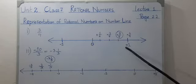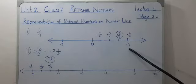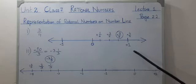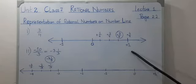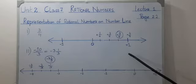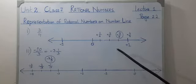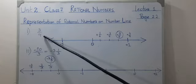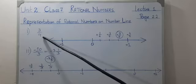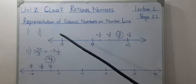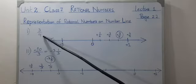Now, we divide the length between 0 and 1 into equal parts. How many equal parts is the question? The denominator tells us the number of equal parts.